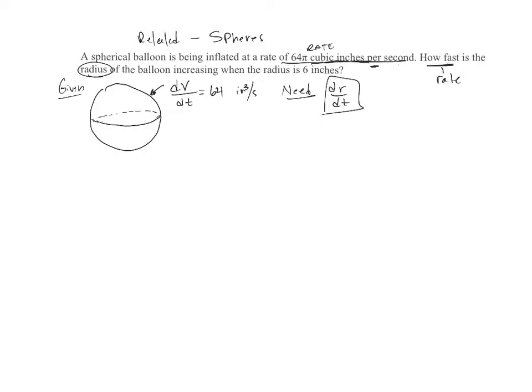Increasing when the radius, they give us the radius, is 6. So we want to know at the instant that it's 6, what's happening and what it's increasing at.